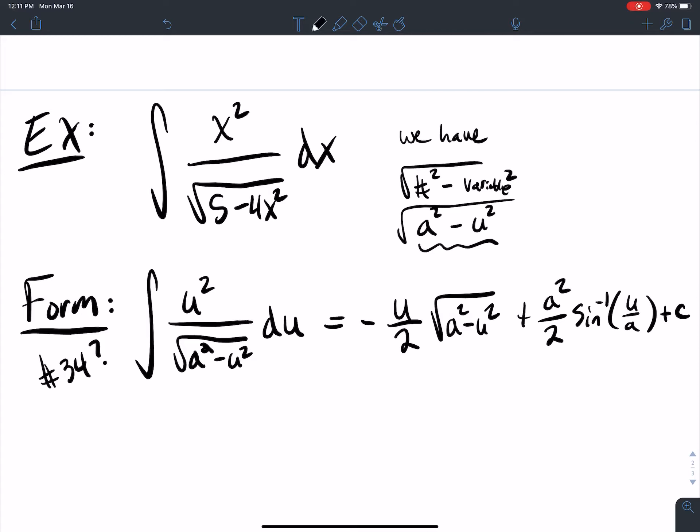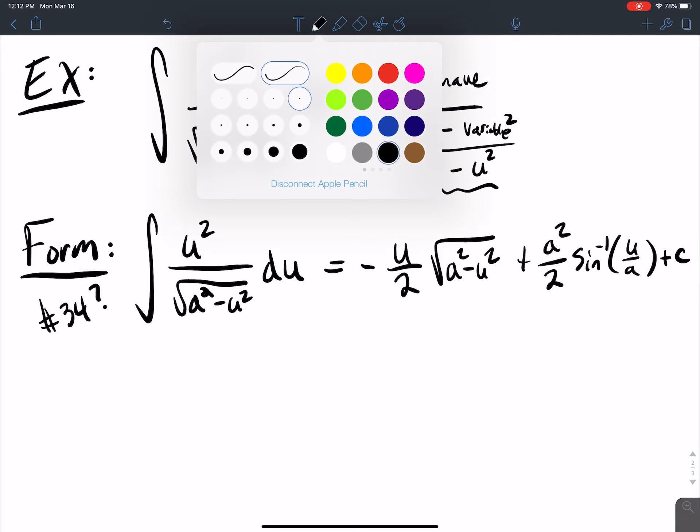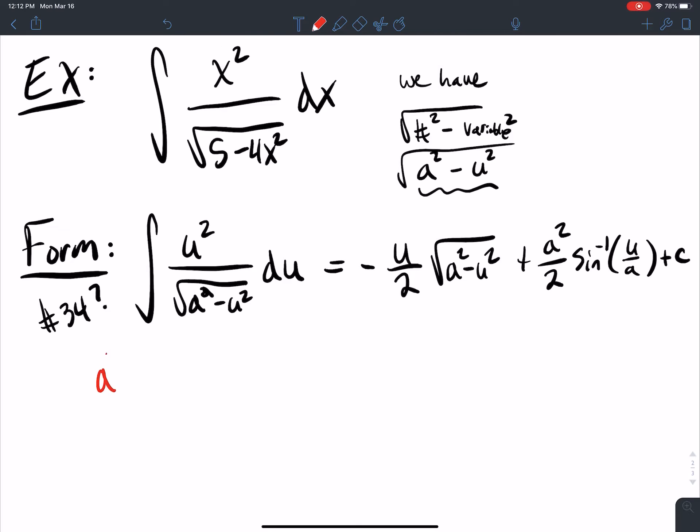And so this says minus u over 2 square root a squared minus u squared plus a squared over 2 sine inverse u over a plus c. So here we need to figure out what a and u are. So for this problem, looks like a squared is equal to 5. So that means that a is equal to the square root of 5. That's going to help us out. But what about u squared? What is u squared equal to? u squared equals 4x squared.